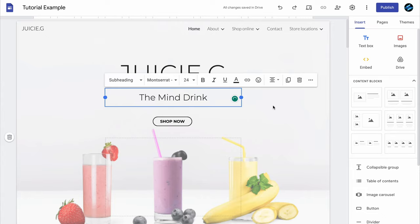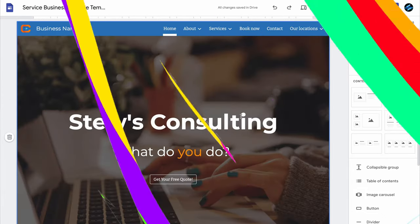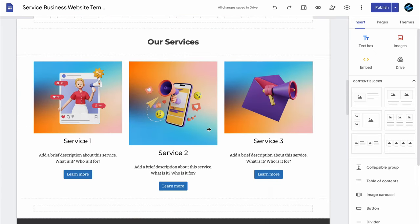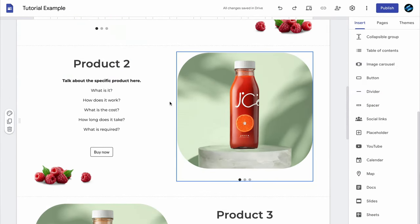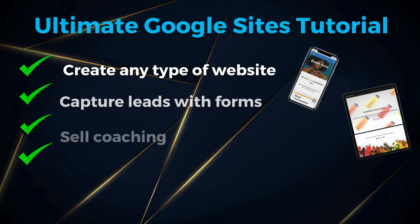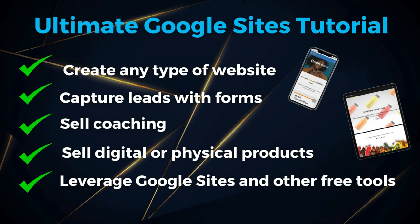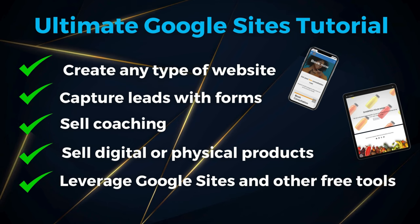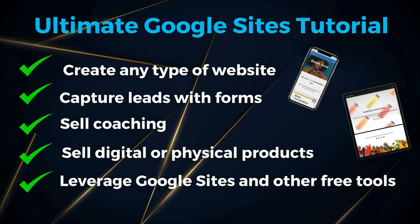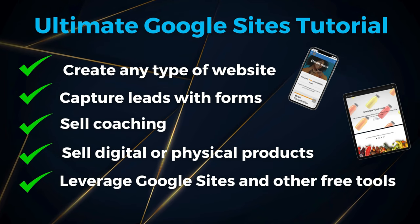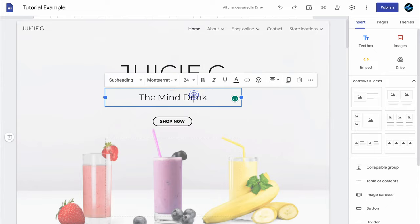Google offers a powerful, no-code website builder called Google Sites, which is completely free for all Google users. Anyone can easily create a standard website or a full-featured e-commerce store for selling products online. Today I'm excited to walk you through from start to finish a complete Google Sites tutorial for beginners. After watching this tutorial you'll be able to create a stunning, full-featured website using Google Sites for your small business — and the great thing is, it's completely free.